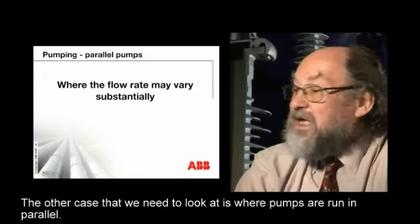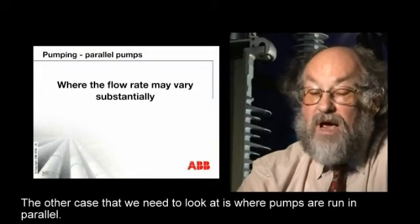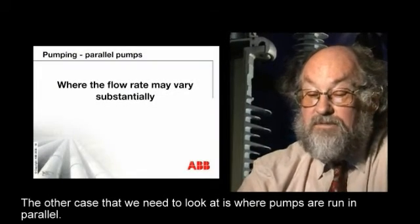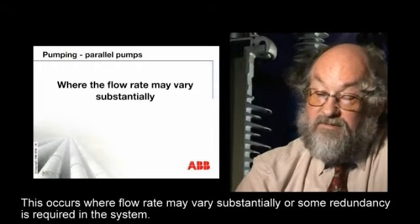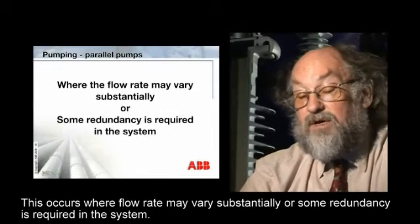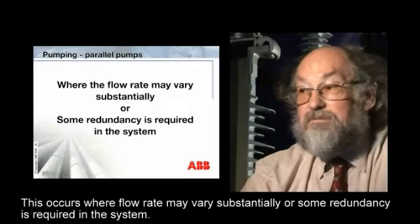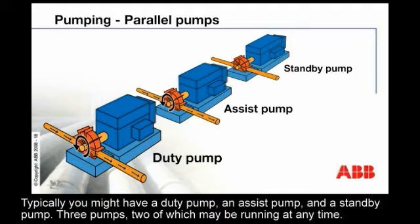The other case we need to look at is where pumps are running in parallel. This occurs where flow rate may vary substantially or some redundancy is required in the system. Typically you might have a duty pump, an assist pump, and a standby pump — three pumps, two of which may be running at any time.